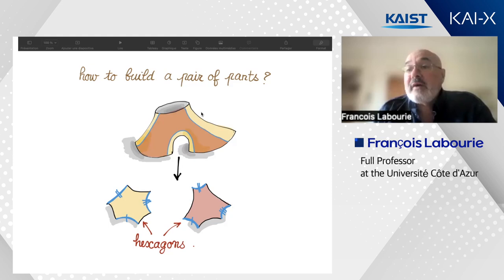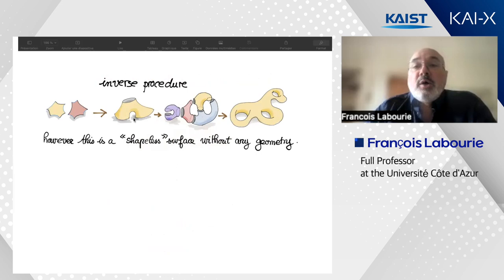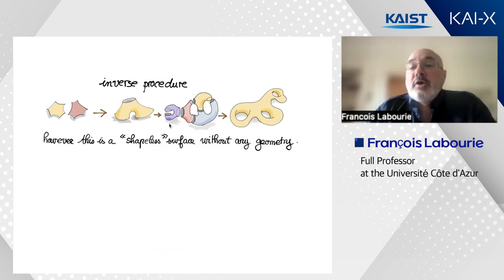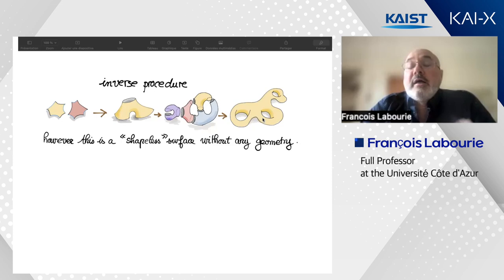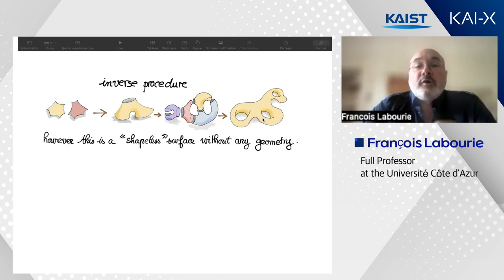We now have a complete description of how to build a surface: start with many hexagons, glue them to get pairs of pants, then glue the pairs of pants together to get a closed surface. The basic result of surface topology says that every closed, connected, oriented surface is obtained exactly by this procedure, and the number of hexagons you start from is a topological invariant.